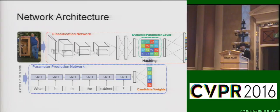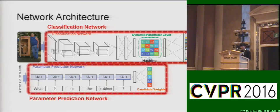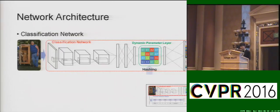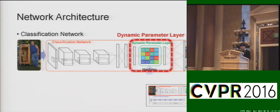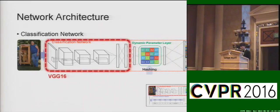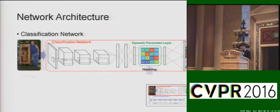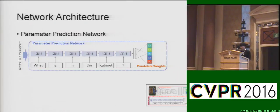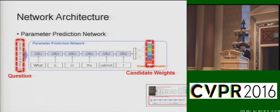This is the overall network architecture. The network is composed of two sub-networks: the classification network and the parameter prediction network. The classification network is a convolutional neural network containing a dynamic parameter layer — specifically, features extracted with the pre-trained VGG-16 network are passed to the dynamic parameter layer, and the network takes an image as input and generates an answer probability vector. The parameter prediction network is composed of gated recurrent units and a fully connected layer, takes a question as input, and generates candidate weights, which are assigned to the dynamic parameter layer based on the hashing function.